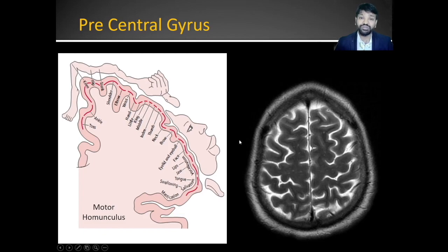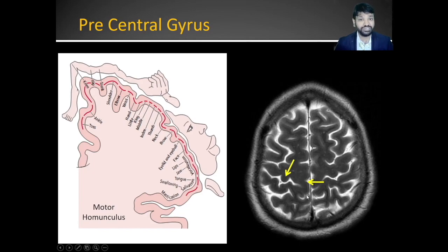On imaging, you will consistently observe certain areas — particularly the hand knob region. In the precentral gyrus, you will appreciate a knob-like structure, a U-shaped depression that corresponds to the hand area. The paracentral lobule, located between the ascending ramus and marginal ramus of the cingulate sulcus on the medial surface, corresponds to the leg region.